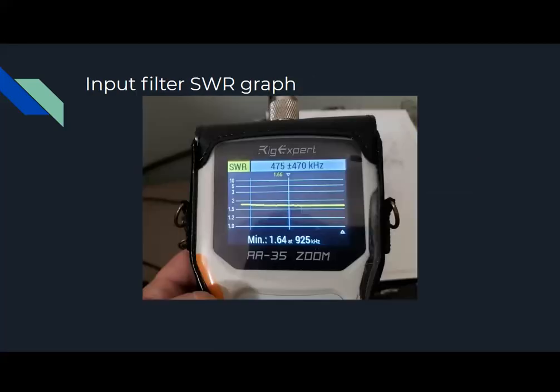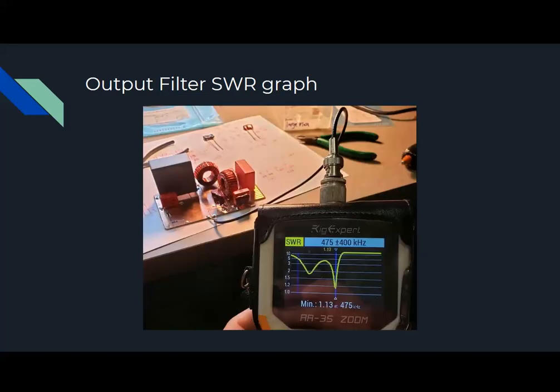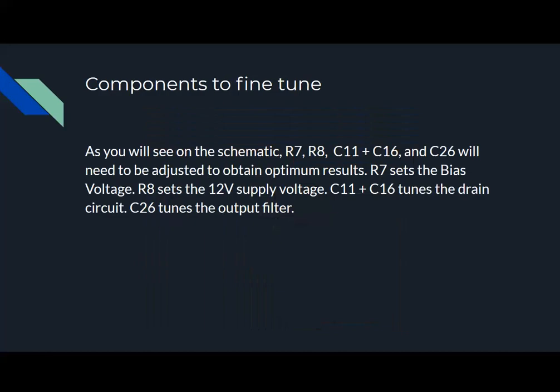Here's the input filter SWR graph, and the output filter's SWR graph. And then this is a list of components that you'll need to fine tune in order to set the bias, set the voltage, and optimize the output filter.